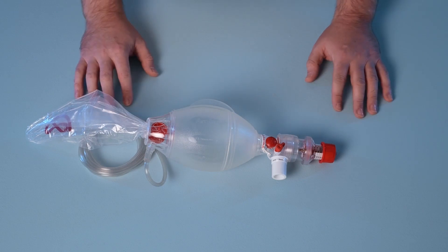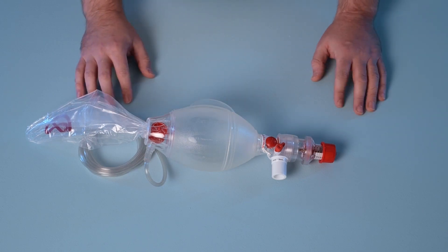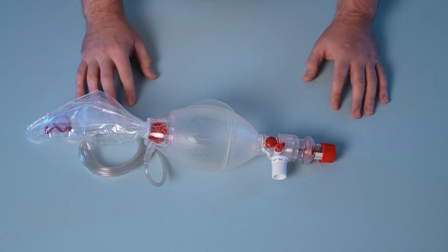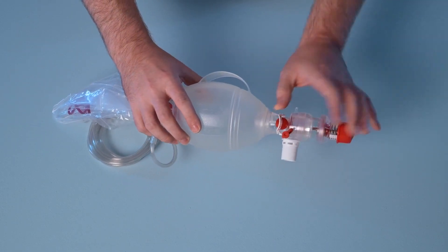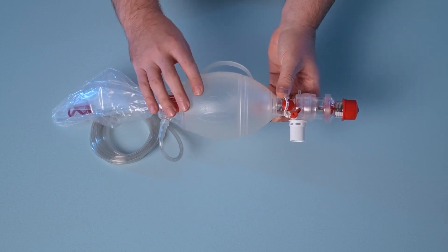Prior to using the Spur2, a pre-use check of the pressure limiting valve is required. So to check the functionality of the valve system, simply engage the override cap to prevent the pressure limiting valve from activating.